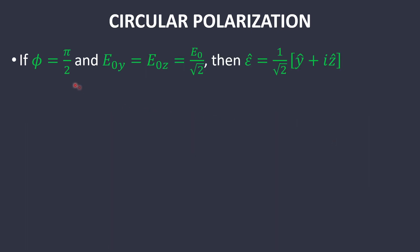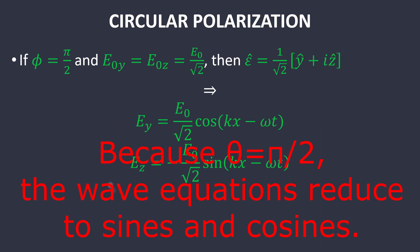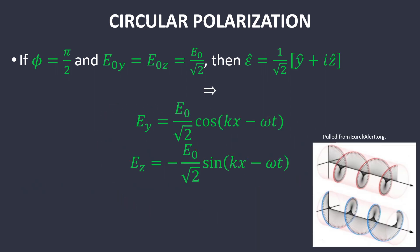Circular polarization arises when you have a phase shift of π over 2, and the amplitude of both components are equal. You can visualize circular polarization here, where this is right-handed polarization, and this is left-handed polarization. If you were to curl your right hand around this axis with your thumb pointing in the direction of propagation, your fingers would curl in the direction of spiraling. That is the convention for determining right versus left-hand polarization of light.